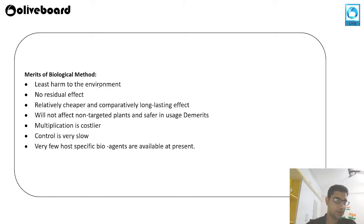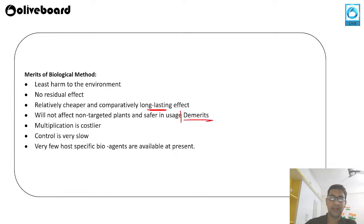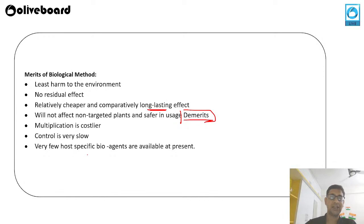Merits of biological weed control: it creates very little harm to the environment, there is no residual effect since biological agents are all natural, it is relatively cheaper, and the process is long-lasting. It does not affect the targeted plant. Demerits: multiplication is costlier for large areas, control is also very slow, and there are very few host-specific bio agents available at present.